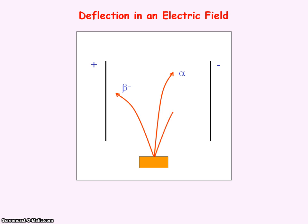And the beta positive particle had a strong deflection towards the negative plate, indicating the positive charge of the beta particle.